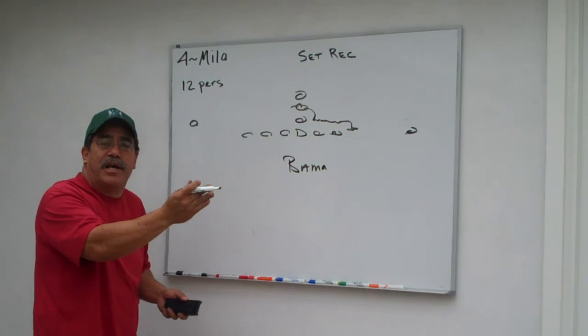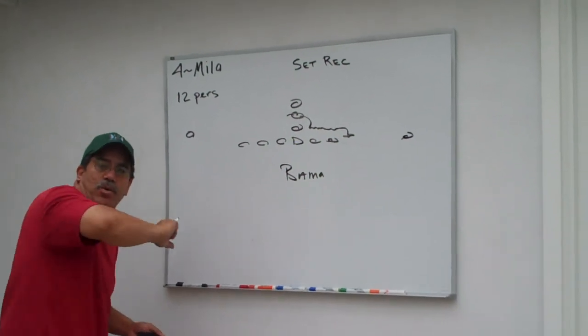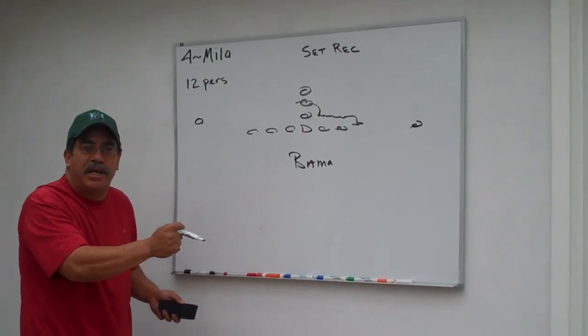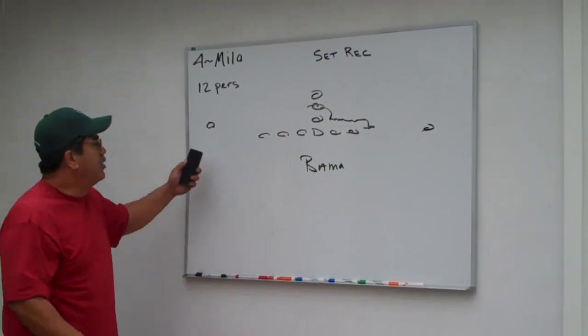So by understanding 21 personnel, 11 personnel when they did the fullback slide to get into a 12 look to a 10 personnel to a 12 personnel.